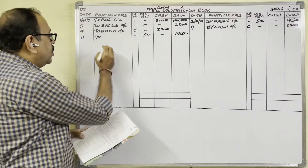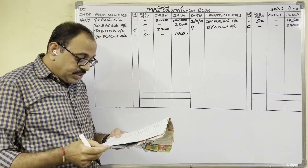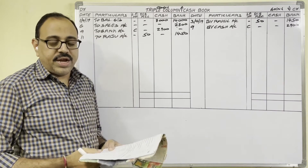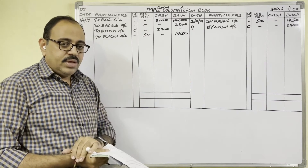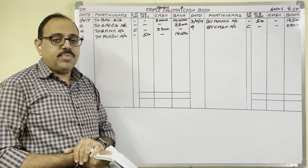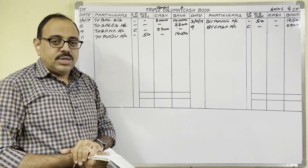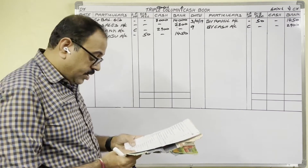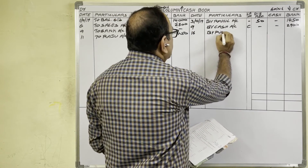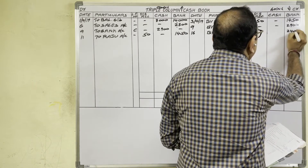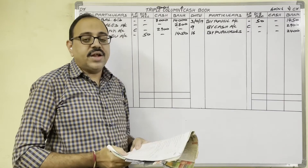16th April: Purchases through debit card — 2,400 rupees. The firm purchased material and paid through debit card (ATM card), meaning money was paid from the firm's bank account to the supplier. Bank balance is decreasing, so on the credit side we write: 16th date, By Purchases Account, 2,400 rupees in the bank column.